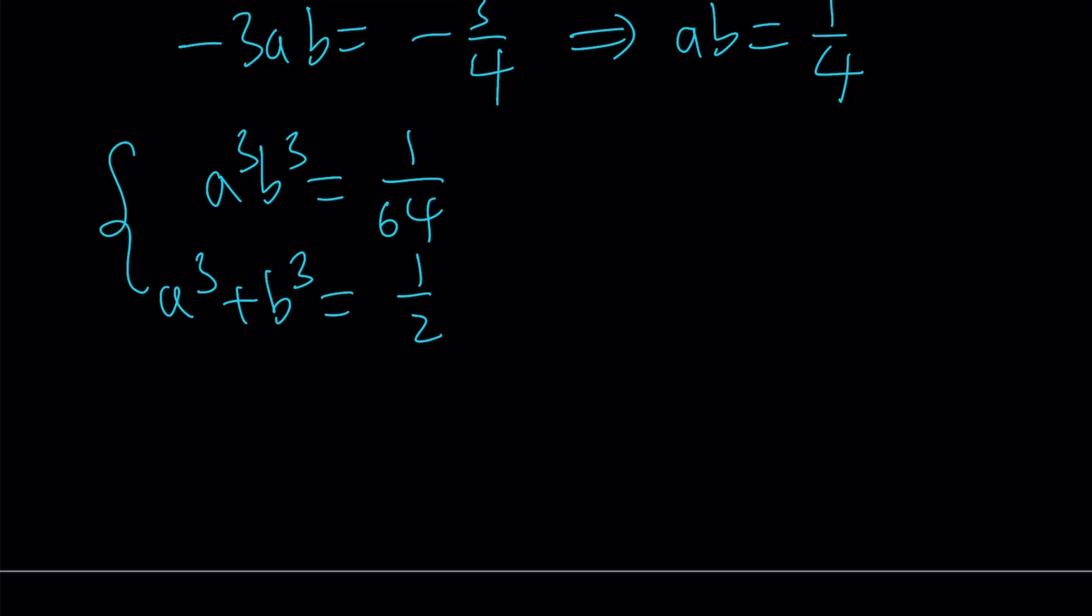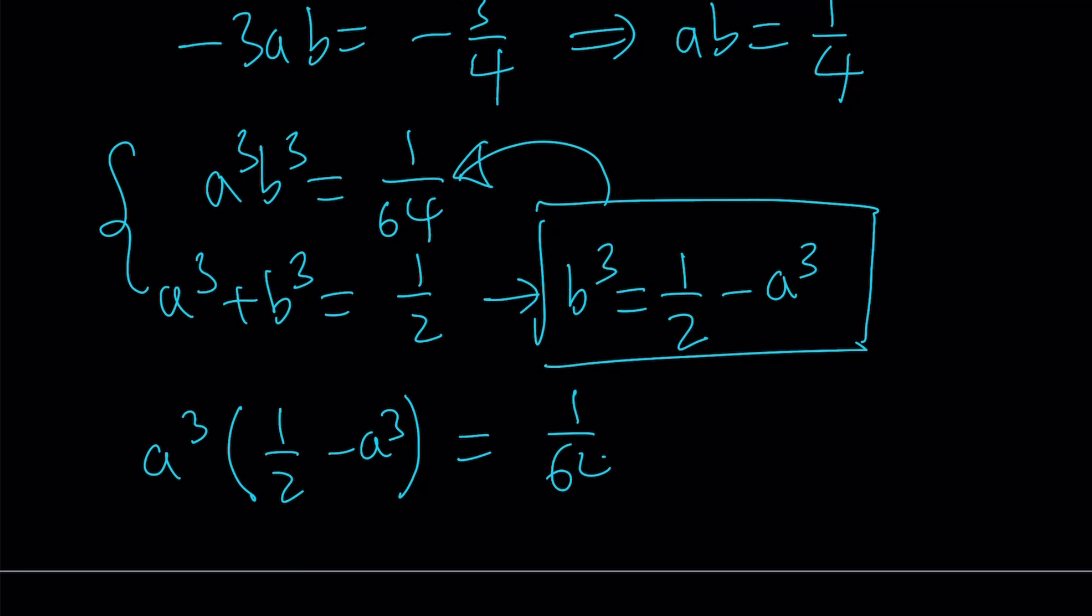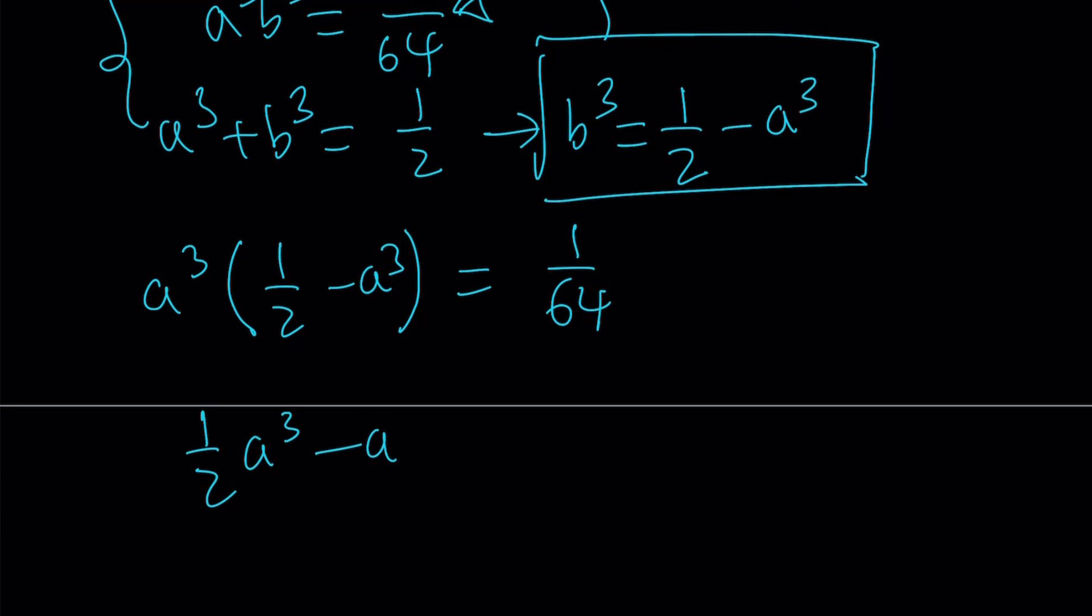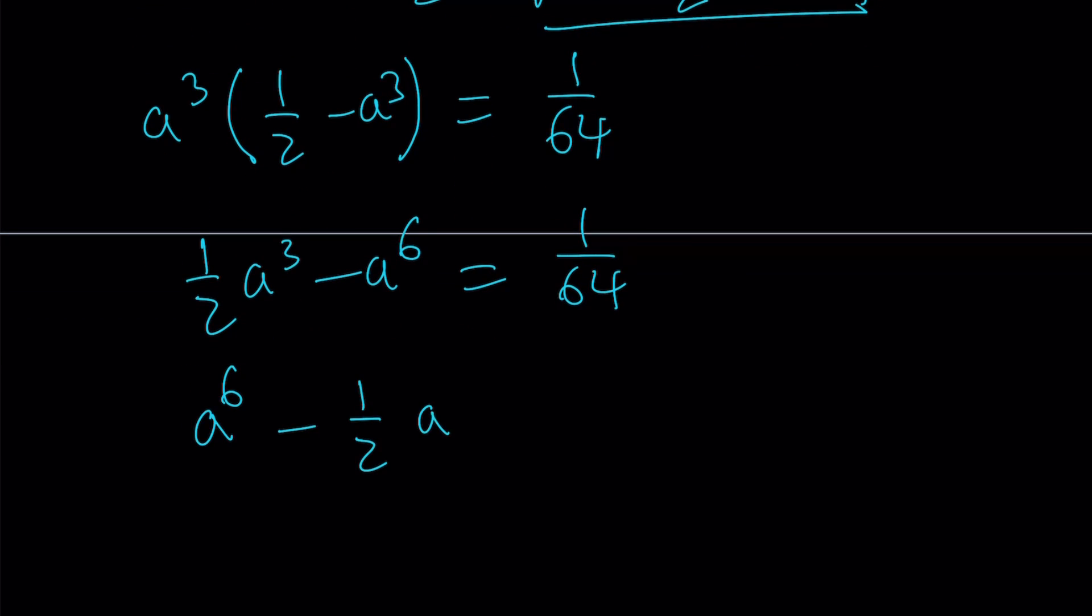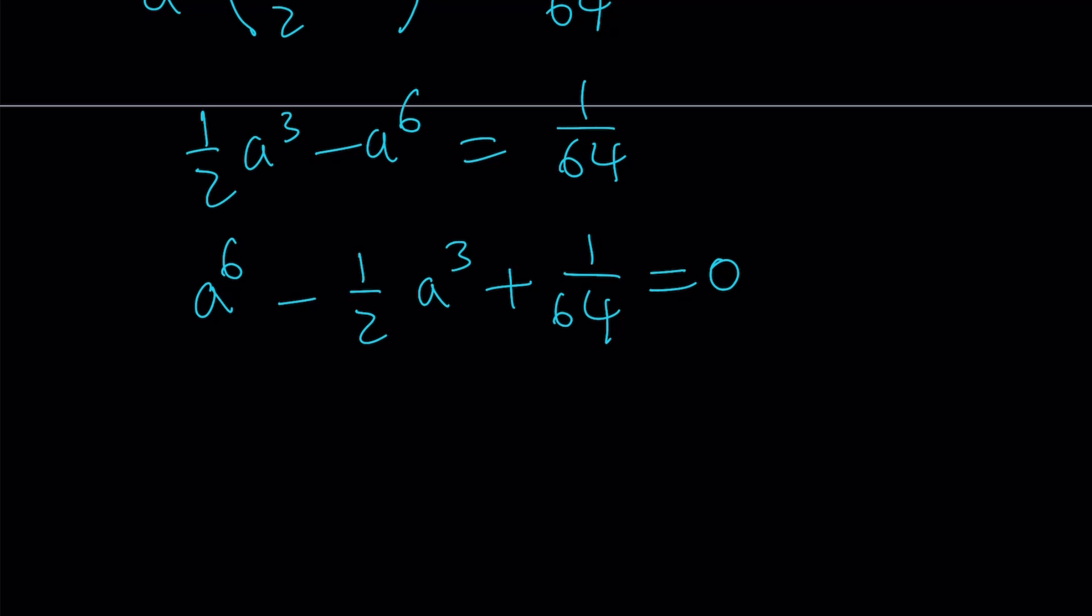And this becomes a quadratic system in a cubed or b cubed, whichever you want to use. So from the second equation, I will isolate b cubed. So I'll write it as 1 half minus a cubed. And substitute that into the first equation. And that is going to give me a quadratic. But first of all, let's see what that gives us, because it's going to give us a sixth power, but we'll turn it into a quadratic. So a cubed multiplied by 1 half minus a cubed equals 1 over 64. Now let's go ahead and distribute. 1 half a cubed minus a to the sixth power equals 1 over 64. Let's put everything on the same side, making the a to the sixth positive. And this is what we get.